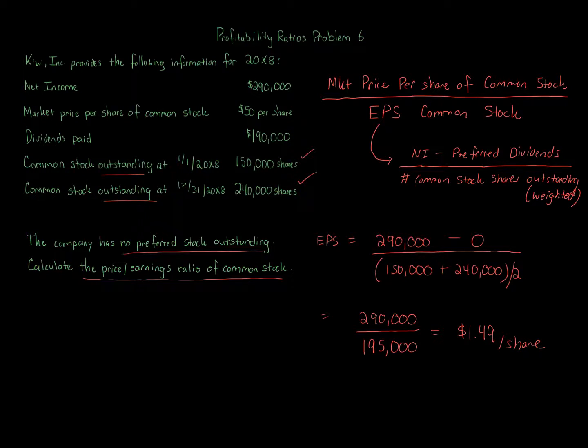Okay, we've just done our earnings per share calculation. Now we can do this calculation. So the market price per share of common stock – we're told it's $50 per share. That's this number right here, $50 per share, market price per share of common stock.